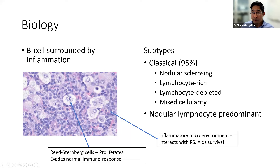There are different subtypes. Most are considered classical — about 95%. There are different names for them but it really doesn't change management that much. There is a much rarer subtype called nodular lymphocyte predominant Hodgkin lymphoma, which behaves a bit differently — more like a B cell non-Hodgkin lymphoma — so in the future it may be classified differently.